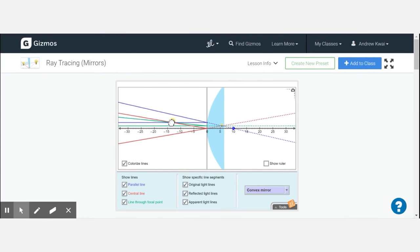If you haven't had a chance yet, I would highly suggest you take a look at this Gizmos. It allows you to play with convex mirrors and allows you to kind of move objects back and forth and see how the resultant image is changed.